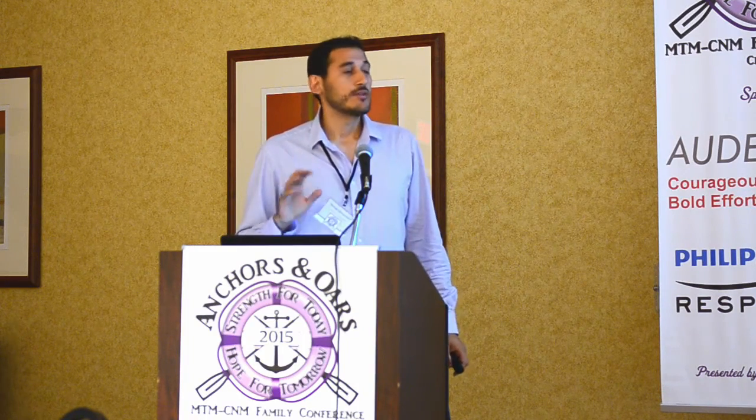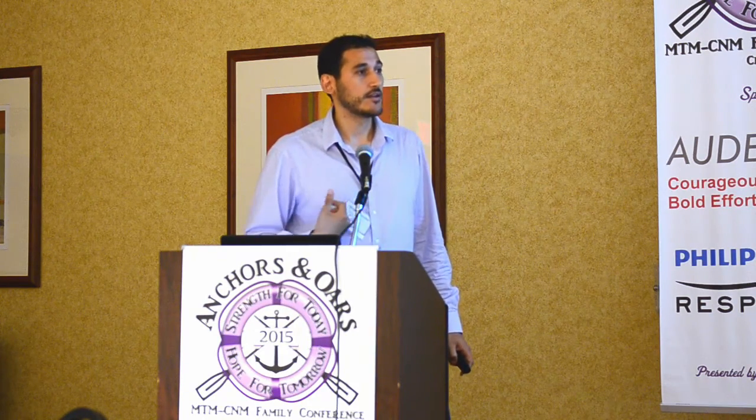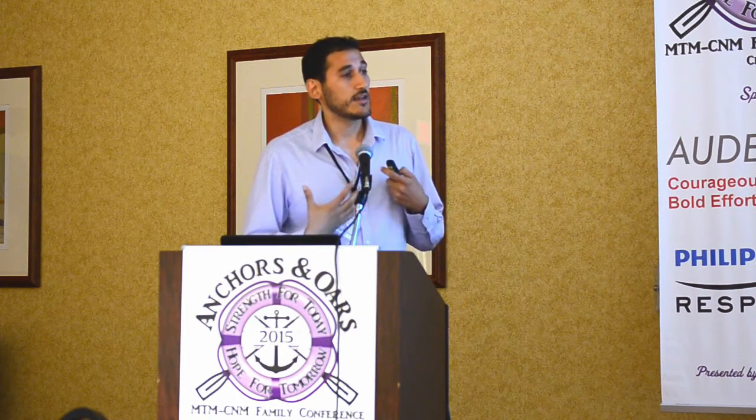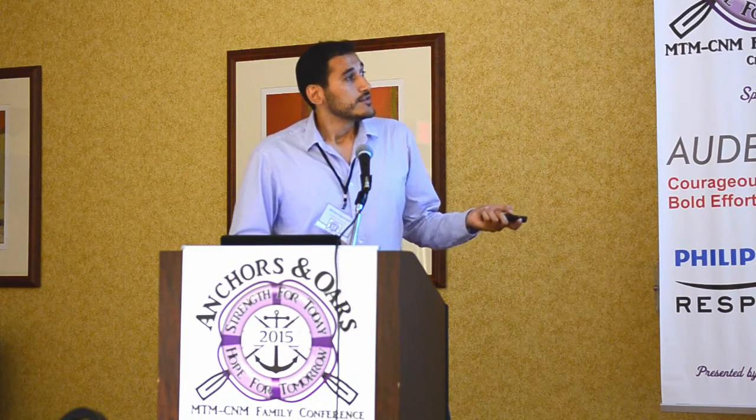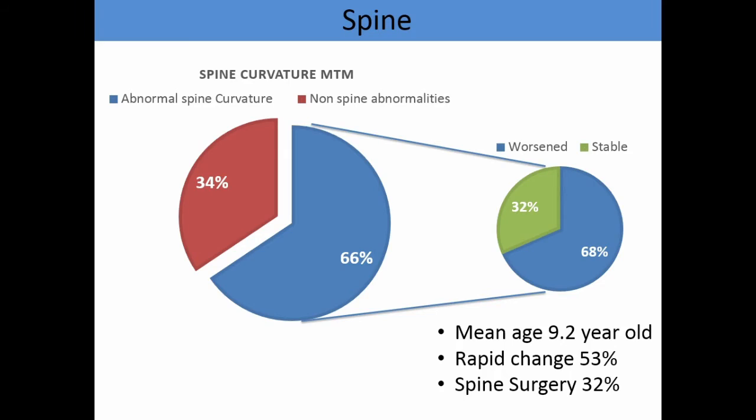Monitoring the spine is really important, because spine deformities or abnormalities in spinal curvature, like scoliosis, will produce chest abnormalities and thoracic malformations, which decrease air volume capacity. In our patient group, 66% had an abnormal spine curvature. Of this group, 68% worsened, especially around 9.2 years of age. 53% had a rapid change, and 32% required spine surgery.